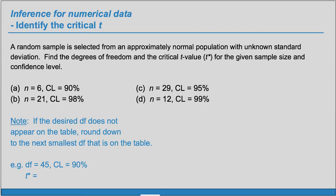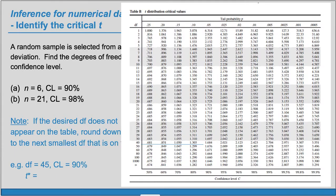So for example, let's say we want a df of 45. We can see that 45 is not on the table. So to be more conservative, we'll round the df down to 40. Of course, that actually means going up on the table. So round to the next smallest df, in this case 40. And we wanted a confidence level of 90%. So here our t-star that we'll use will be approximately 1.684.